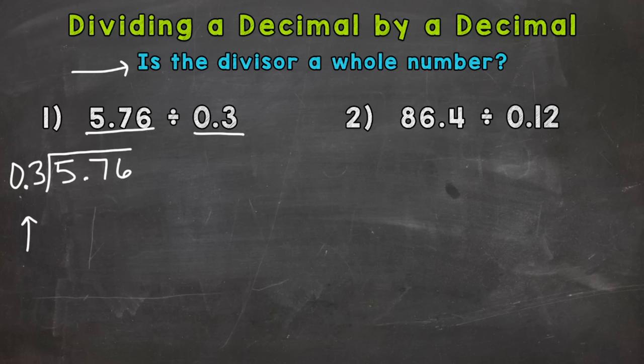We can do this by multiplying that divisor by a power of 10, therefore creating a whole number divisor. We do this by moving the decimal to the right once — that will give us a whole three. Moving the decimal to the right once pushes that three over to the ones place.